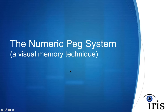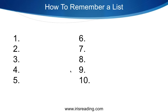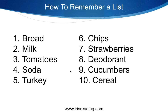These two principles — that you remember visual information, and that you remember strange things — underlie the techniques we'll discuss. The first technique is the Numeric Peg System. This is not widely taught in high schools or colleges, but it should be. We're going to implement it using a simple grocery list. I'm going to have you memorize a 10-item list right now.